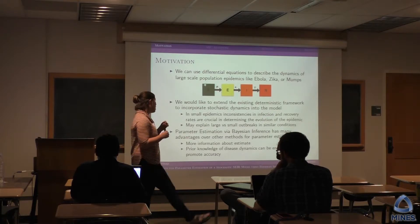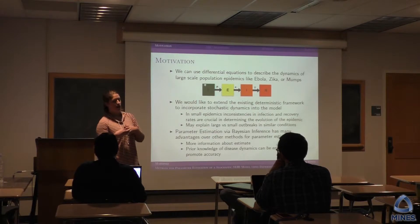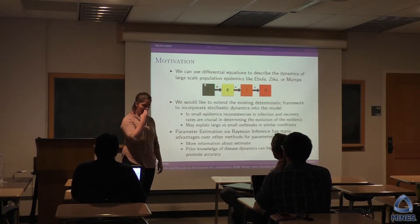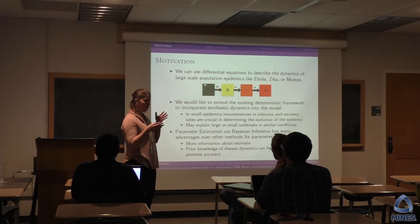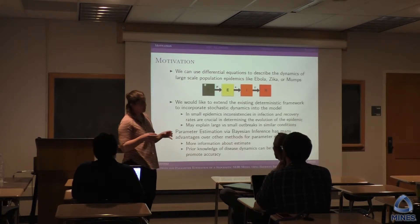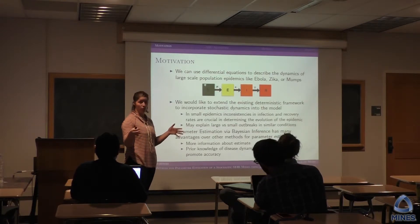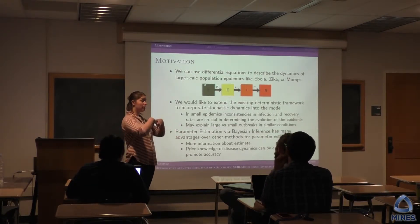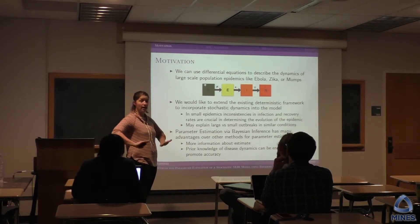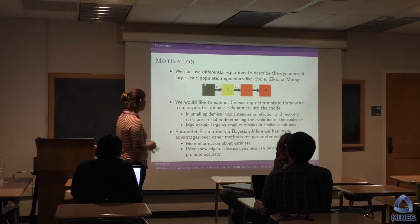You can also incorporate prior knowledge with the evidence. For example, with Ebola, the latent period: one over the latent period alpha. For Ebola, you're typically infectious for four to ten days, but it can range from two to twenty-one biologically. You can put a distribution with more likelihood on that four-to-ten range, less on the extremes, and none beyond the biological limits — because that's what we know through research of this disease.